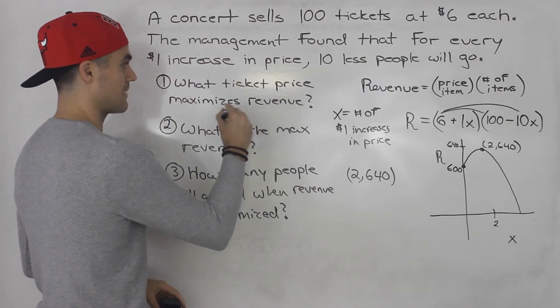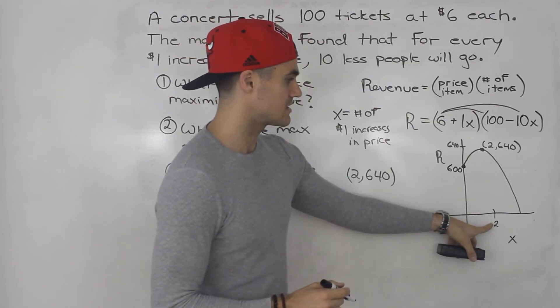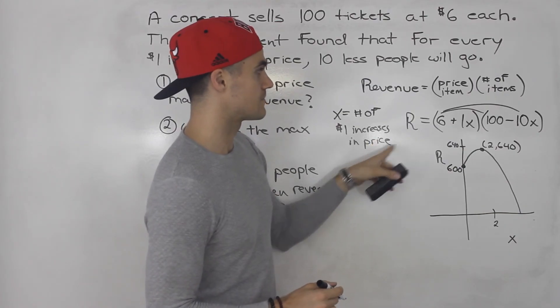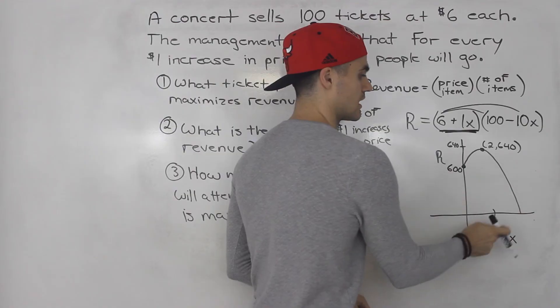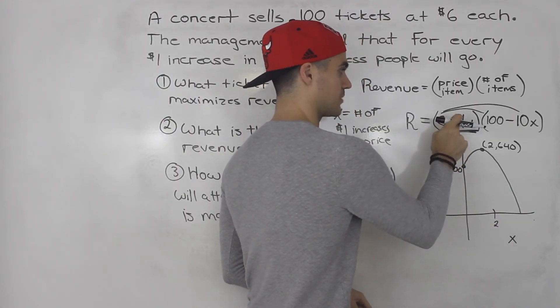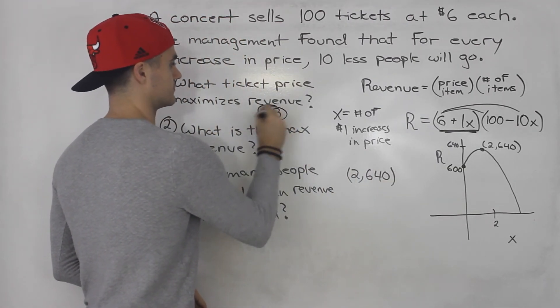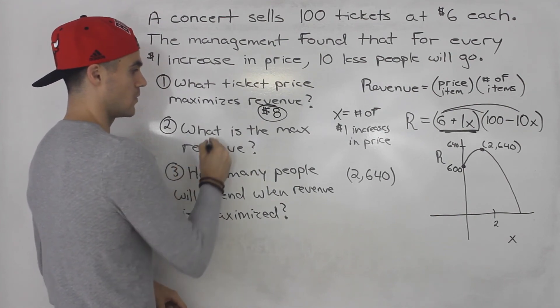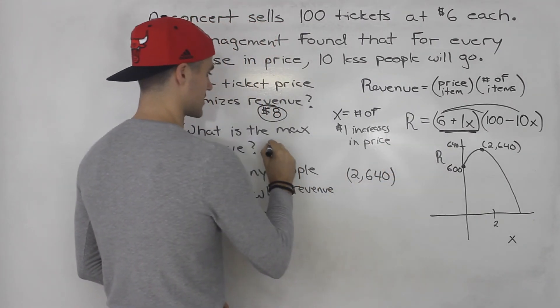We can answer all the questions now once we have this vertex. What ticket price maximizes revenue? Now here you got to be careful. This x of 2 represents the number of $1 increases in price. And this whole bracket is the price bracket. So you got to sub in 2 for x here. So 6 plus 1 times 2 gives us $8. That's the ticket price that maximizes revenue. What is the maximum revenue? That is this here, 640.